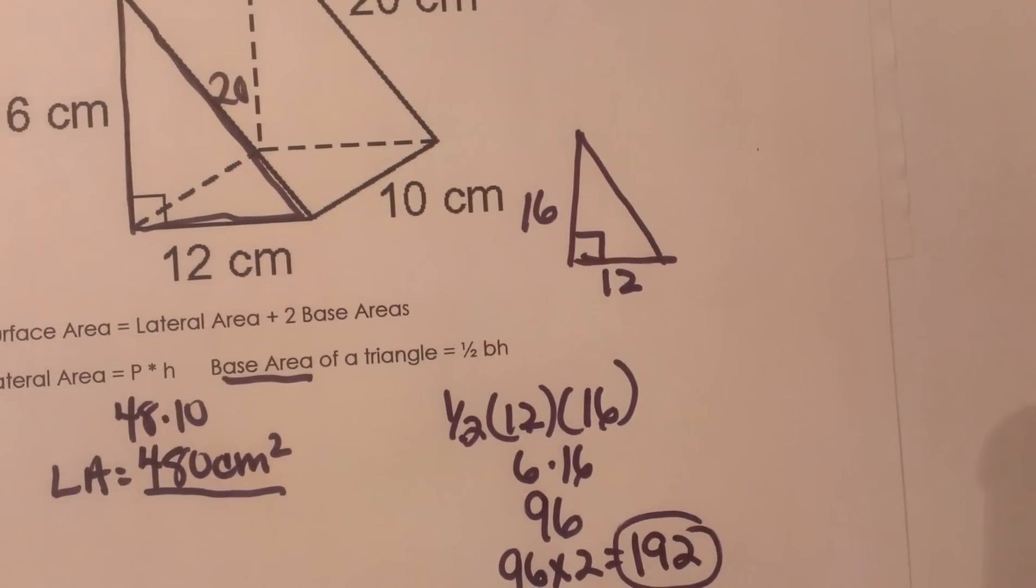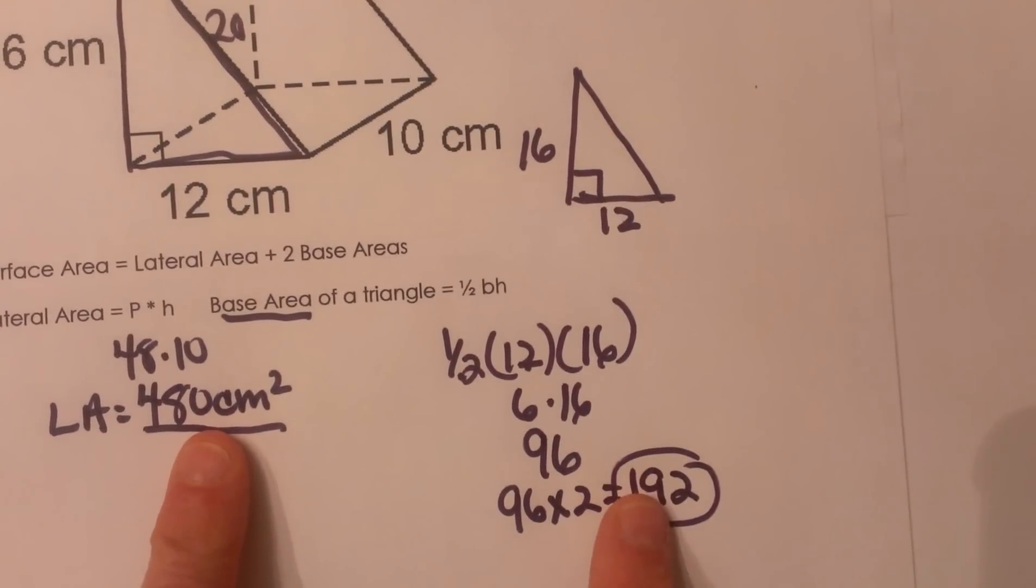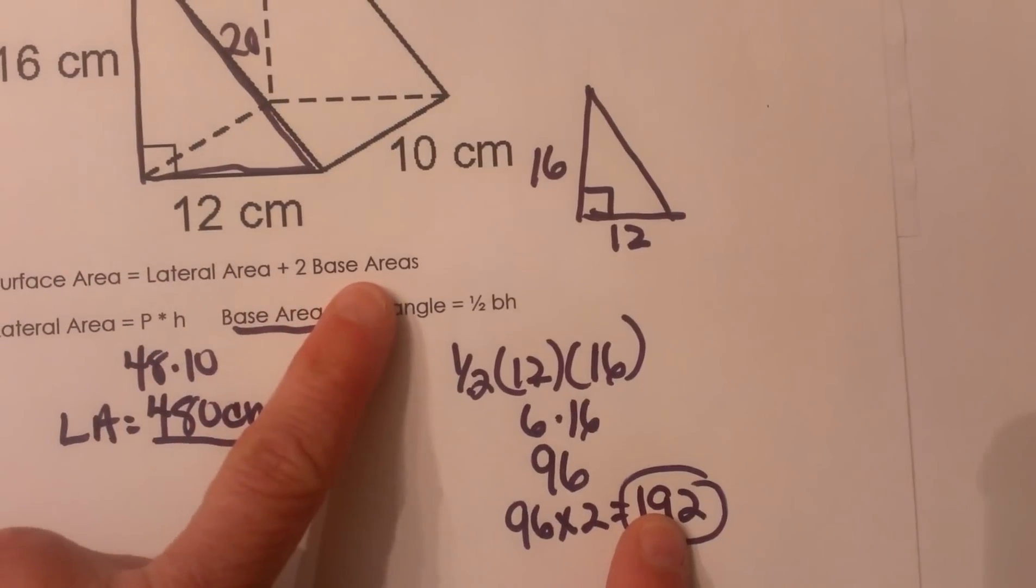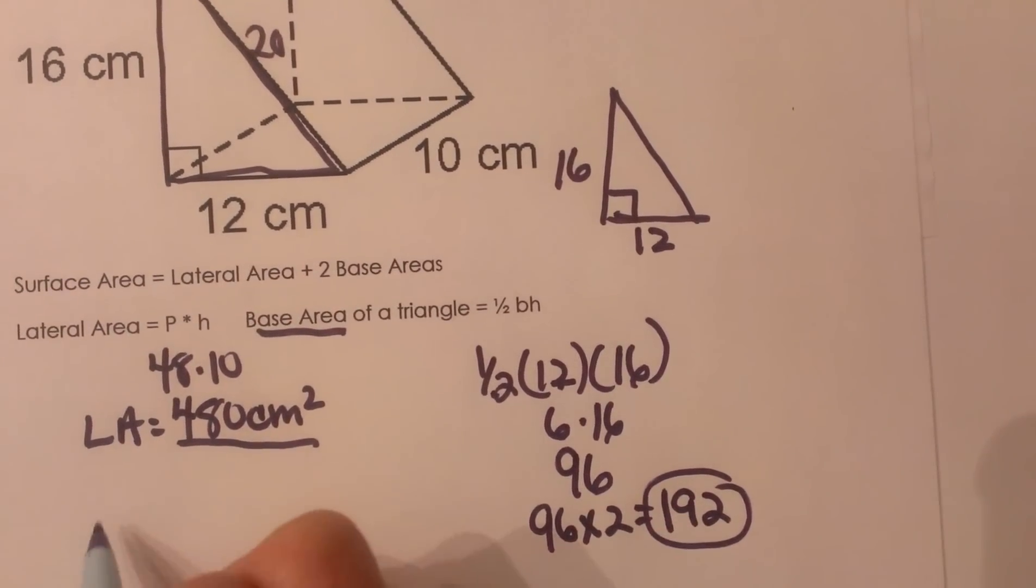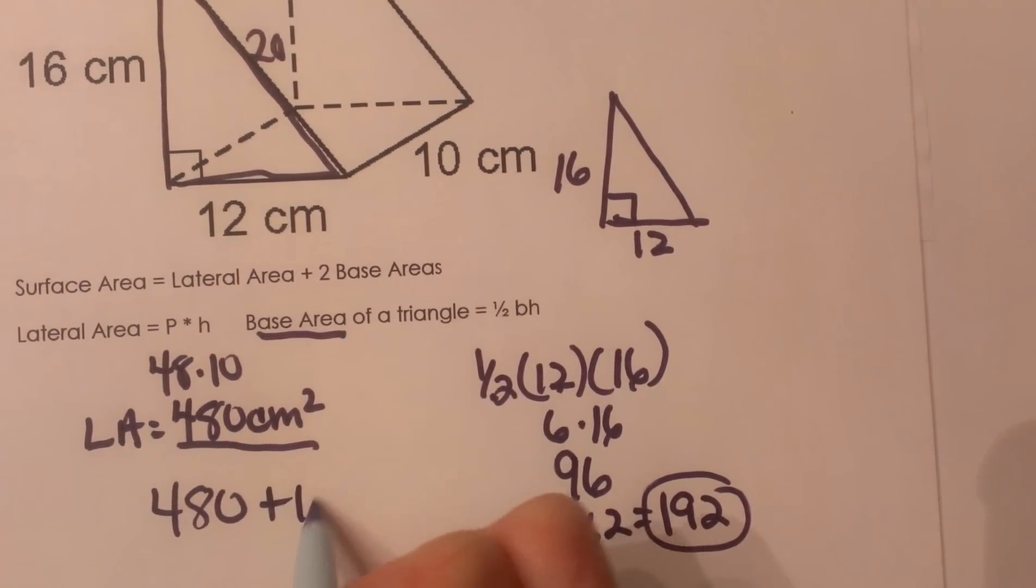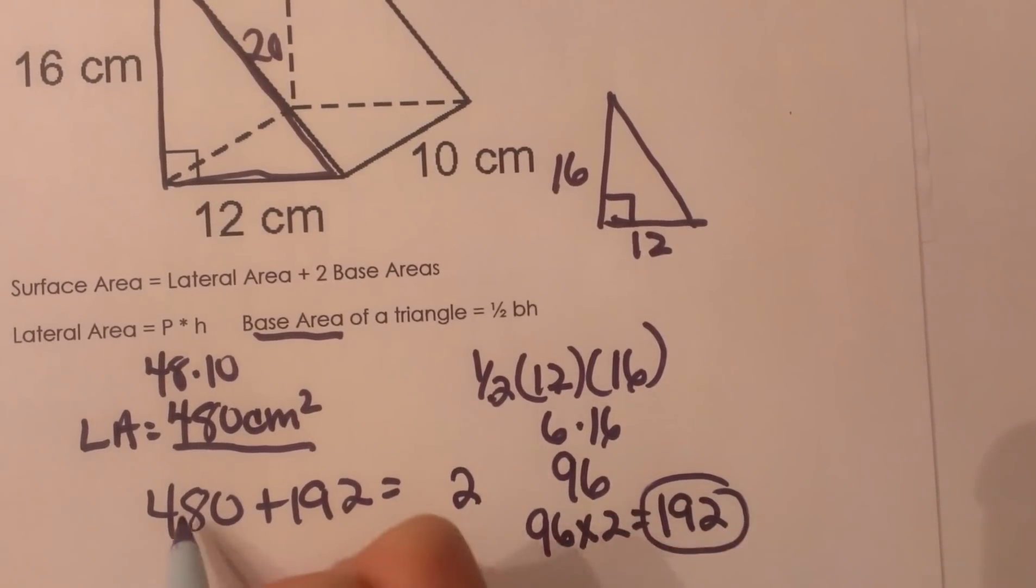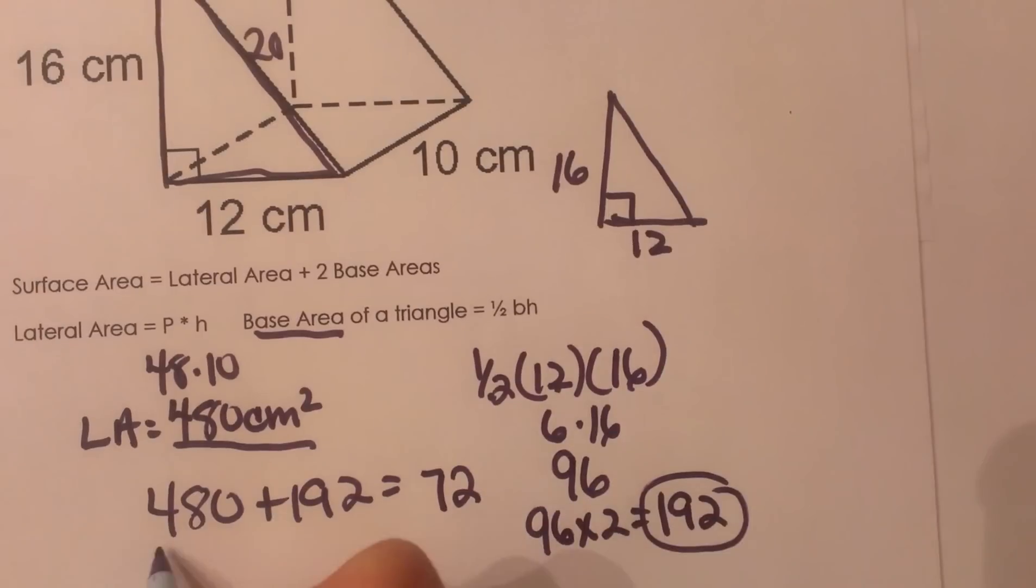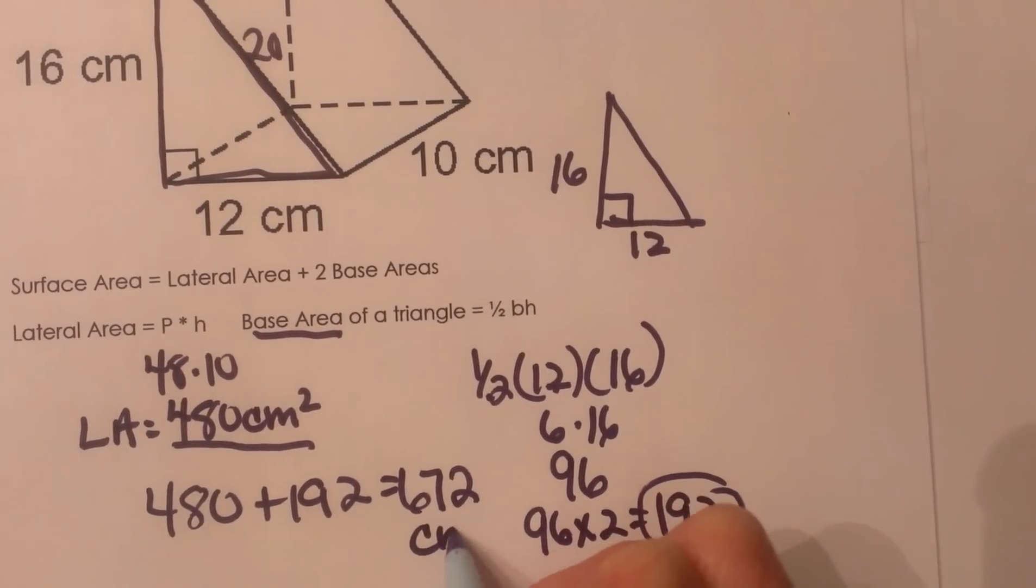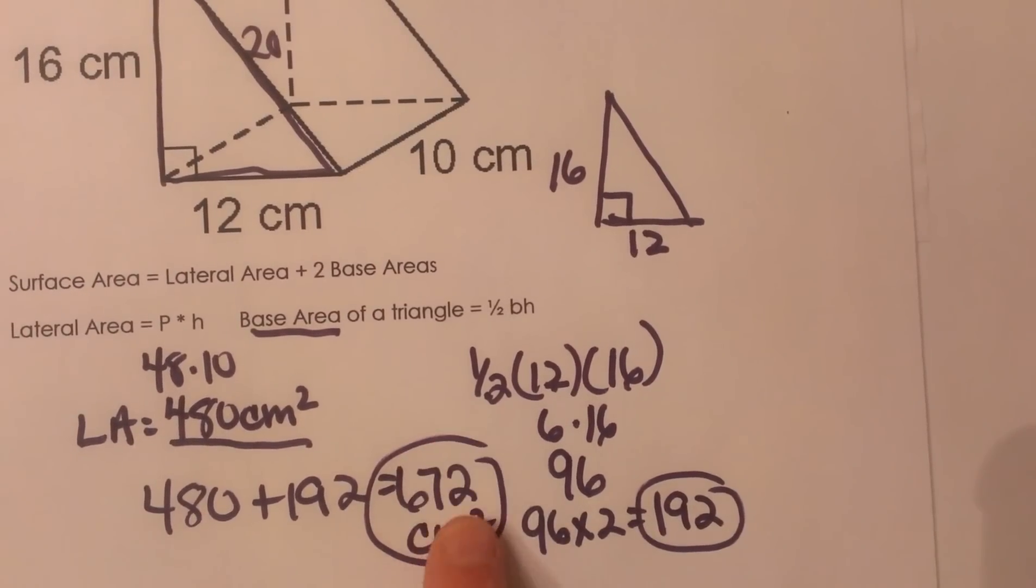Now what do I do? I have the lateral area, I have accounted for both base areas, and I just add those two together to get the total surface area. So I'll take 480 plus 192, and that's going to give me, let's see, 2, 17, carry the 1, 672 square centimeters. And remember, area is always unit squared.